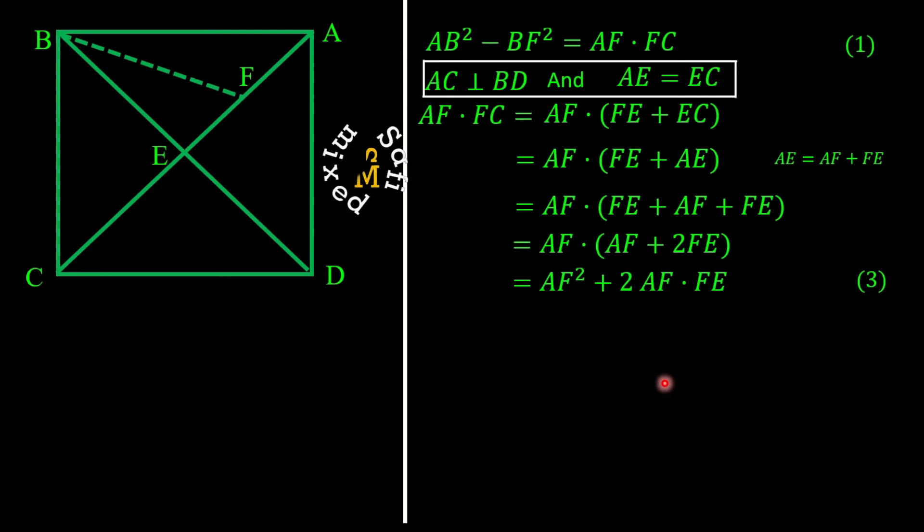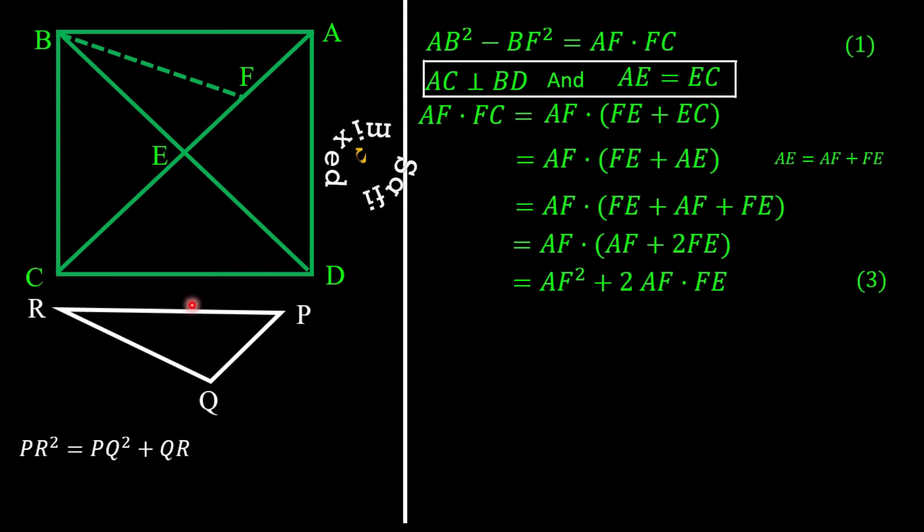Now let us consider an obtuse triangle PQR like this one. For such a triangle this condition is always satisfied: the square of the length PR equals the square of the side PQ plus the square of the side QR plus 2 times the scalar product of PQ·QR.